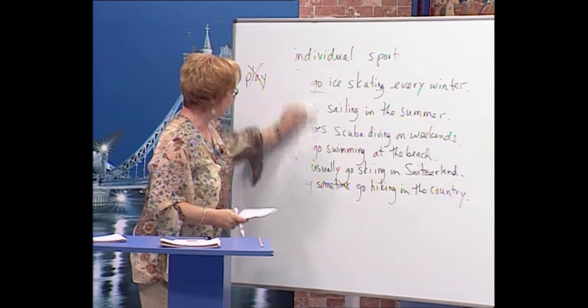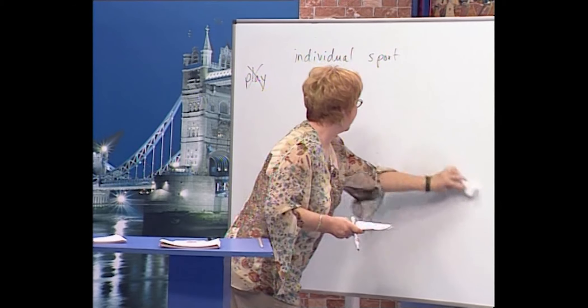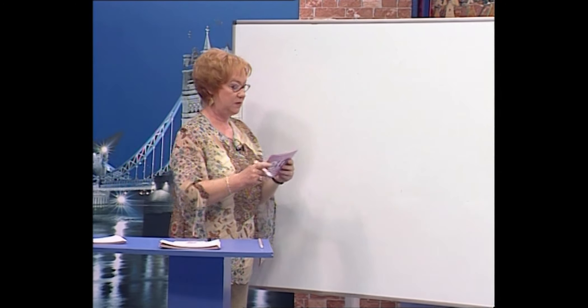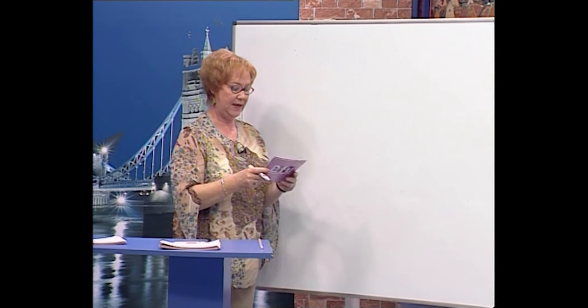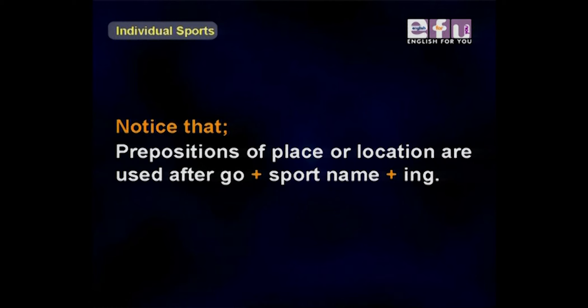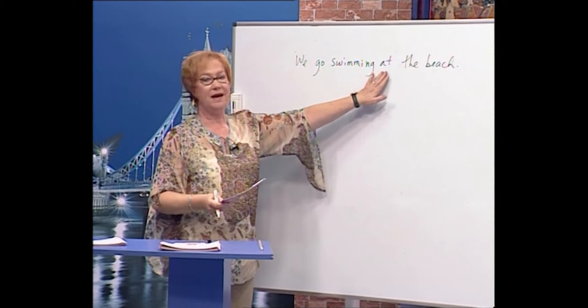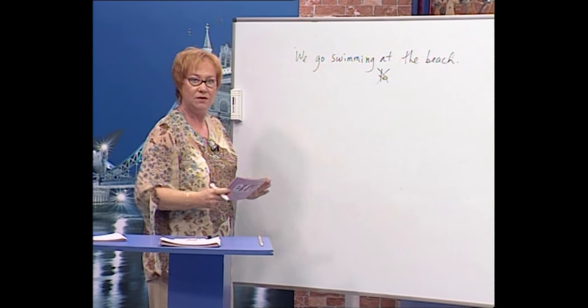Now let's talk about prepositions with this structure. We use prepositions of place or location — not prepositions of direction. This is very important. After 'go + sport name + ing,' we use place prepositions. For example: 'We go swimming at the beach' — not 'to the beach.' 'At the beach,' not 'to the beach.'